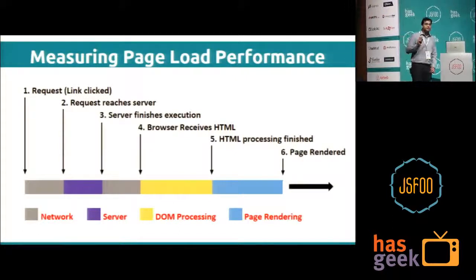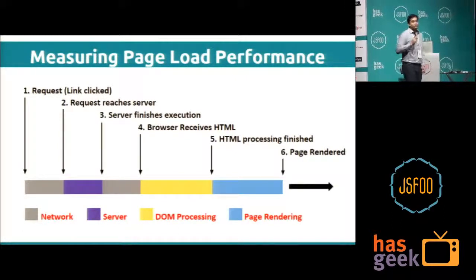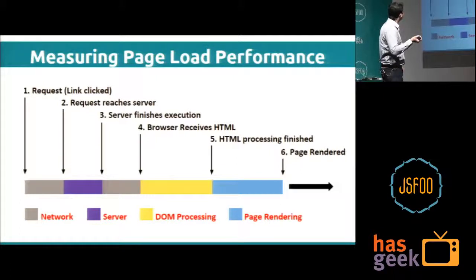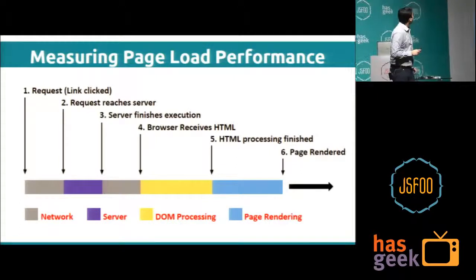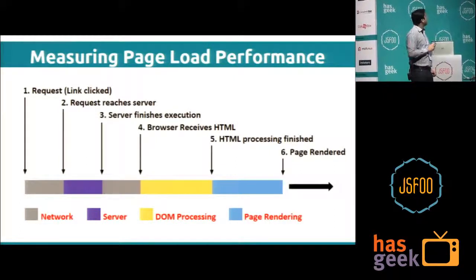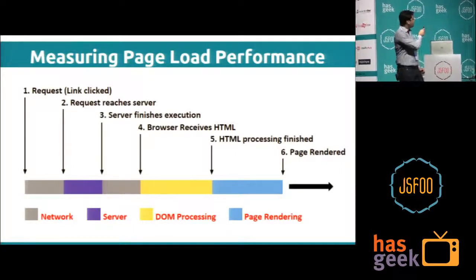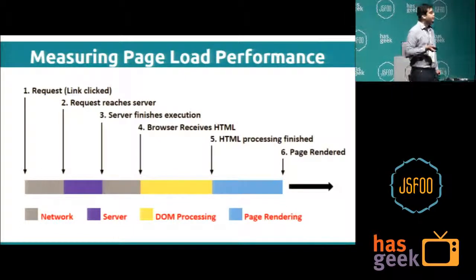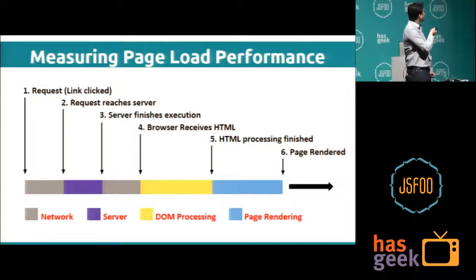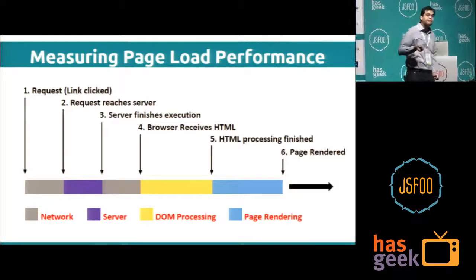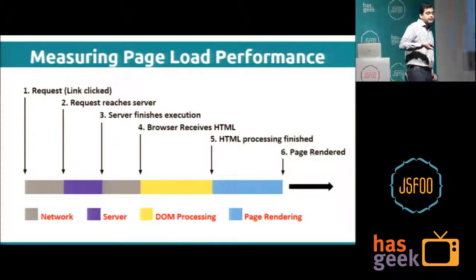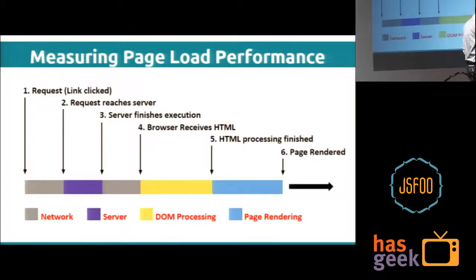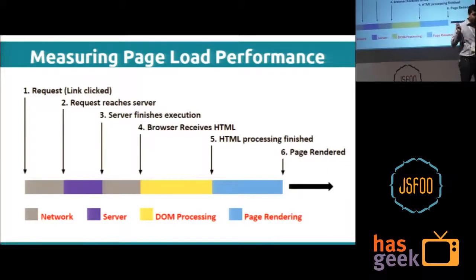What key metrics can we drive from this? To know how much network lag is present, we determine it by finding the time interval between steps 2 and 1, and steps 4 and 3 — that gives network lag. How much time the server takes to process a request is found by subtracting step 3 and step 2. Similarly, DOM processing time — how the browser parses the HTML — can be found by subtracting steps 5 and 7, and the total time taken can also be calculated.